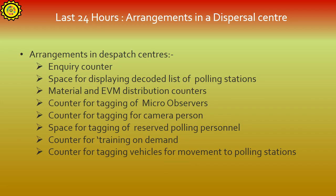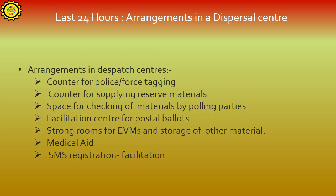Arrangements in a Dispersal Center include: Inquiry Counter, space for displaying decoded list of polling stations, material and EVM distribution counters, counter for tagging of micro-observers, counter for tagging of camera persons, space for tagging of reserved polling personnel, counter for training on demand, counter for tagging vehicles for movement to polling stations, counter for police or force tagging, counter for supplying reserved materials, space for checking of materials by polling staff, facilitation center for postal ballots, strongroom for EVM and storage of other materials, medical aid, and SMS registration facilitation.